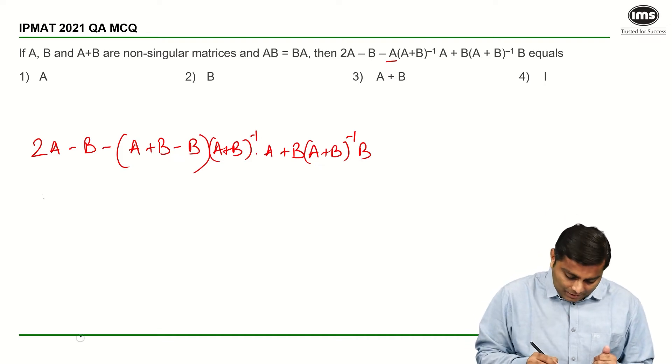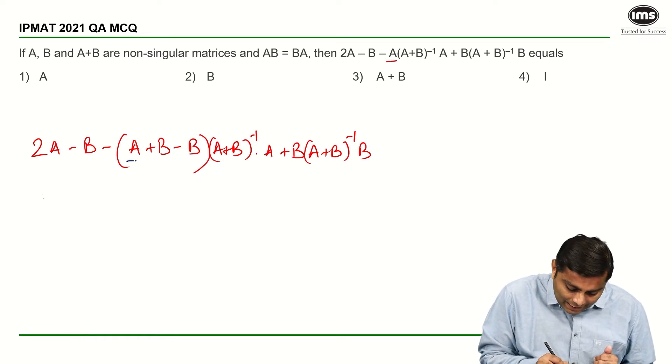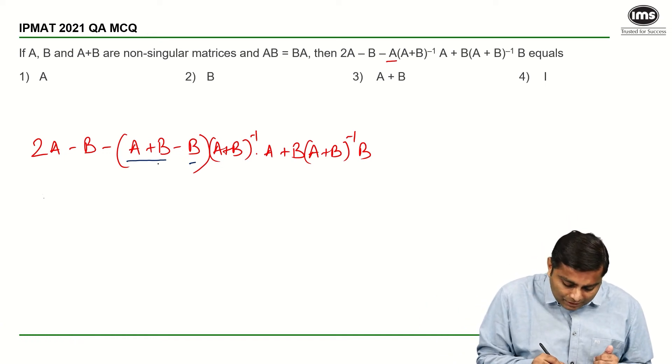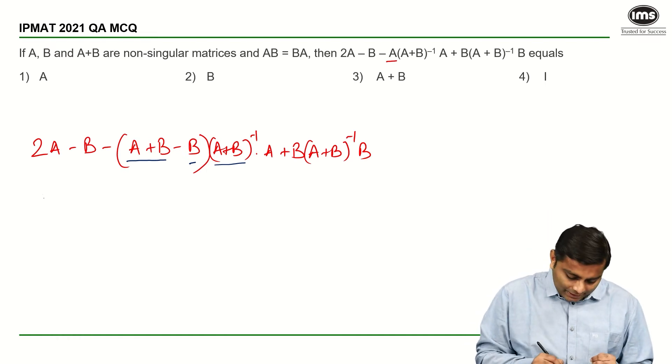Now, have a look at this question, at these terms. See, this is A plus B and B multiplied with A plus B inverse. So, A plus B into A plus B inverse is going to give us I, correct.